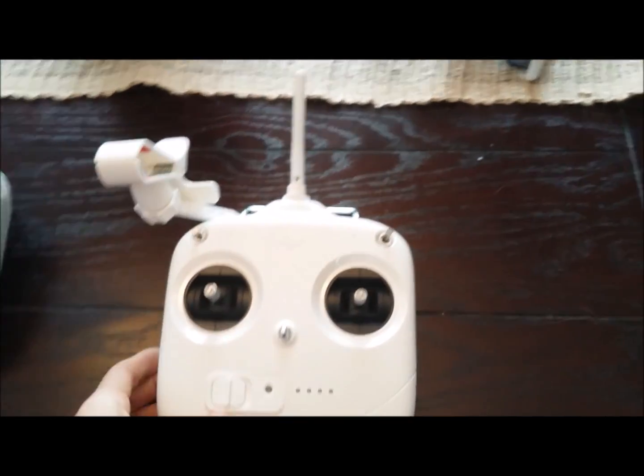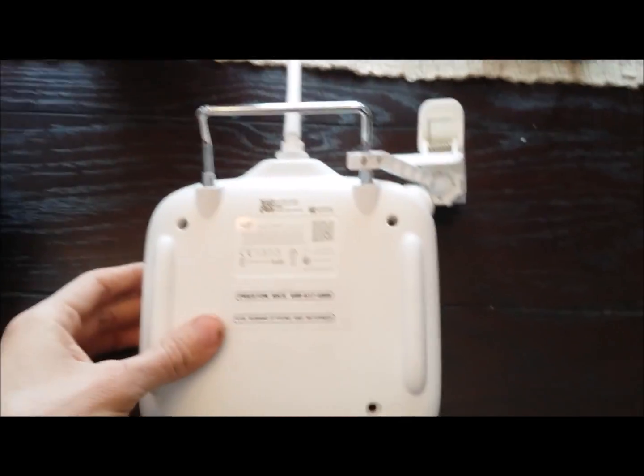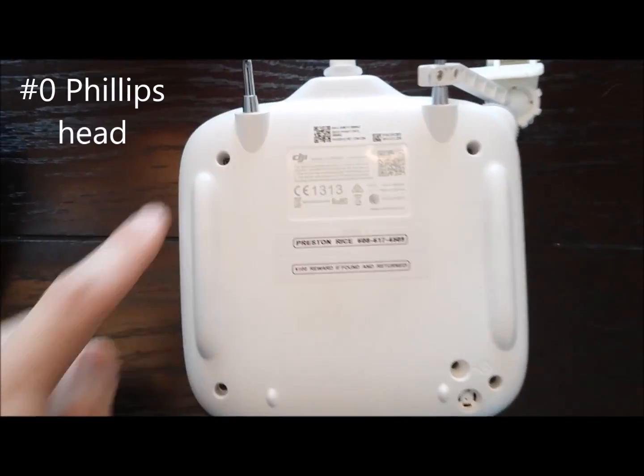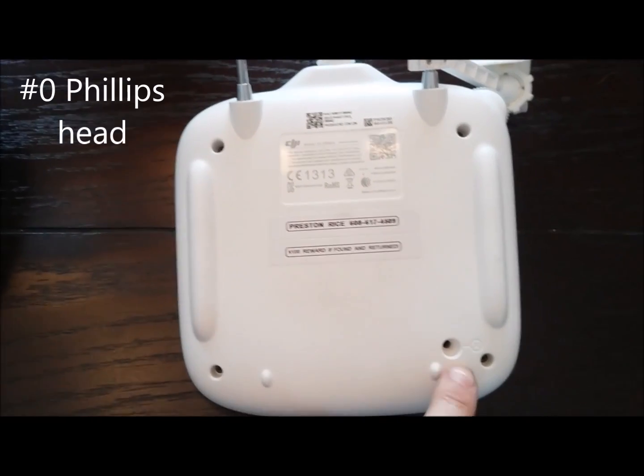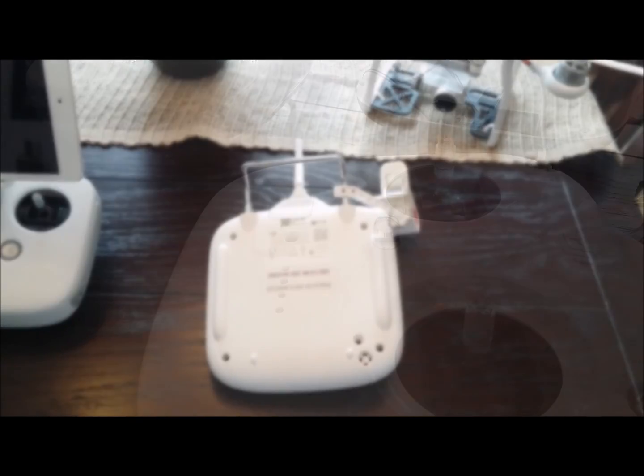So the first thing we'll have to do is take the remote control apart. There's going to be four Phillips head screws on the back here we need to take off. There's one at each corner. So let's go ahead and take those off and take a look at the inside to see what we have to do next.